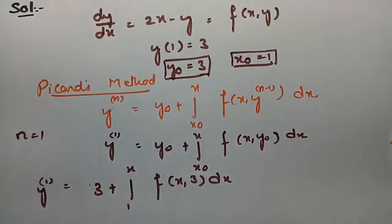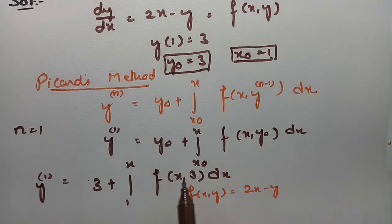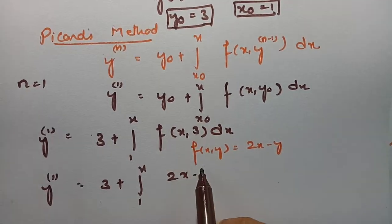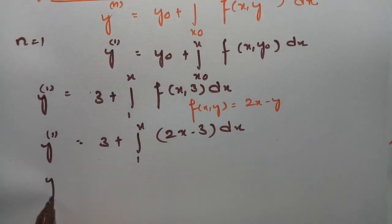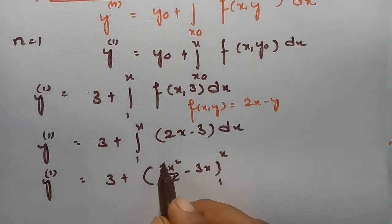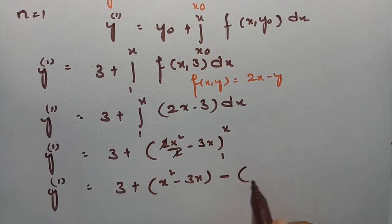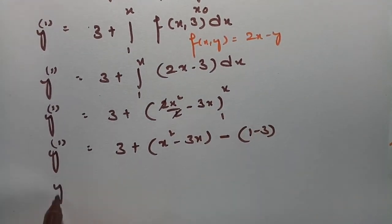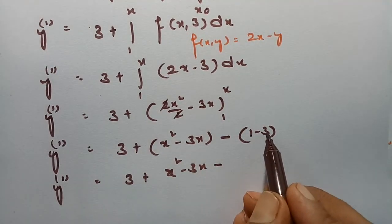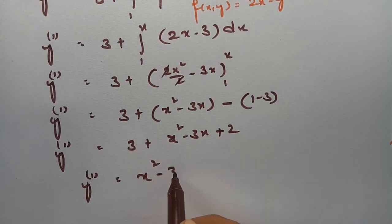So f(x, y) = 2x - y, so I substitute y = 3: this becomes 3 plus integral from 1 to x of (2x - 3) dx. Integrating: 3 plus [x² - 3x] from 1 to x. Substituting the upper limit minus lower limit: 3 plus (x² - 3x) minus (1 - 3), which is 3 plus x² - 3x minus (-2), giving plus 2.